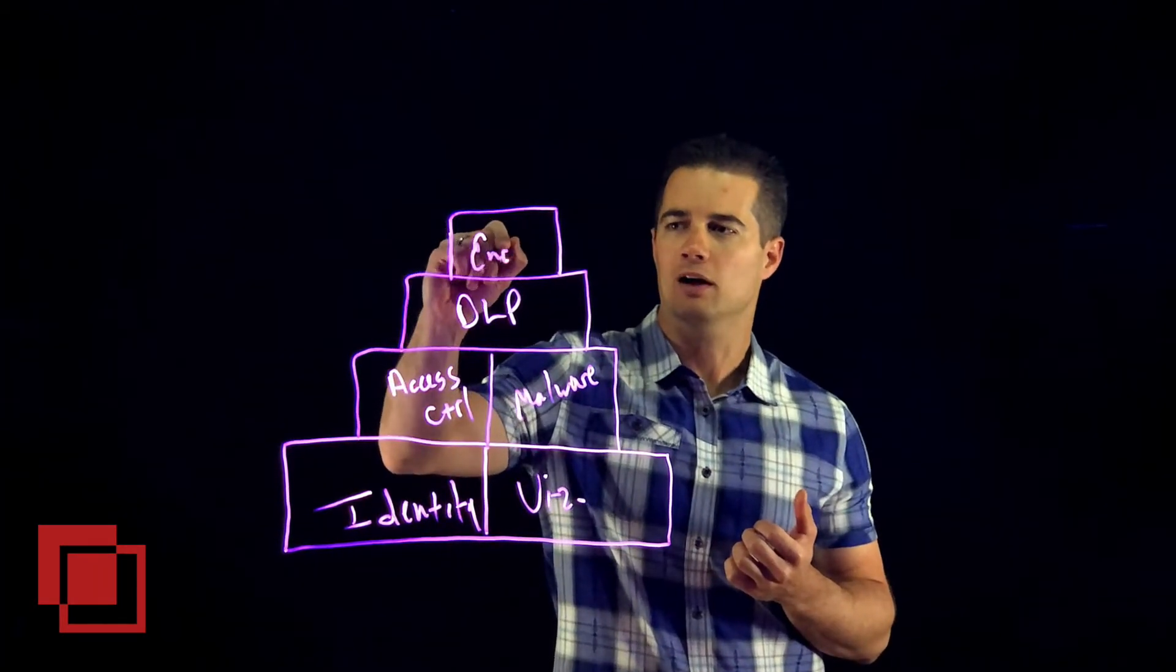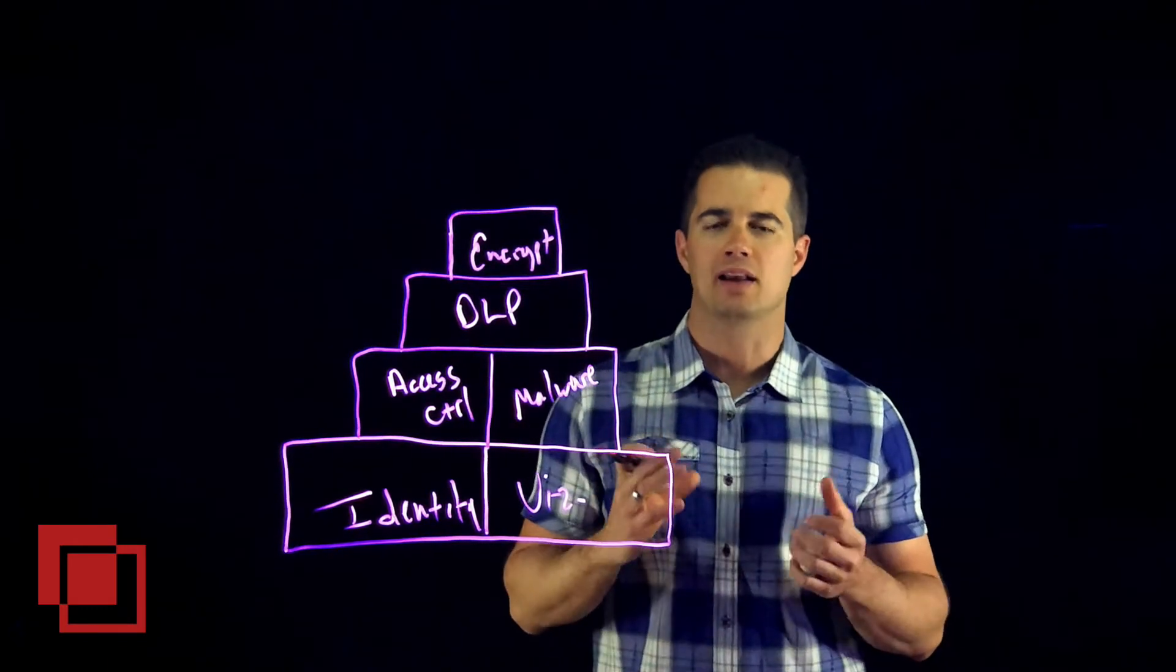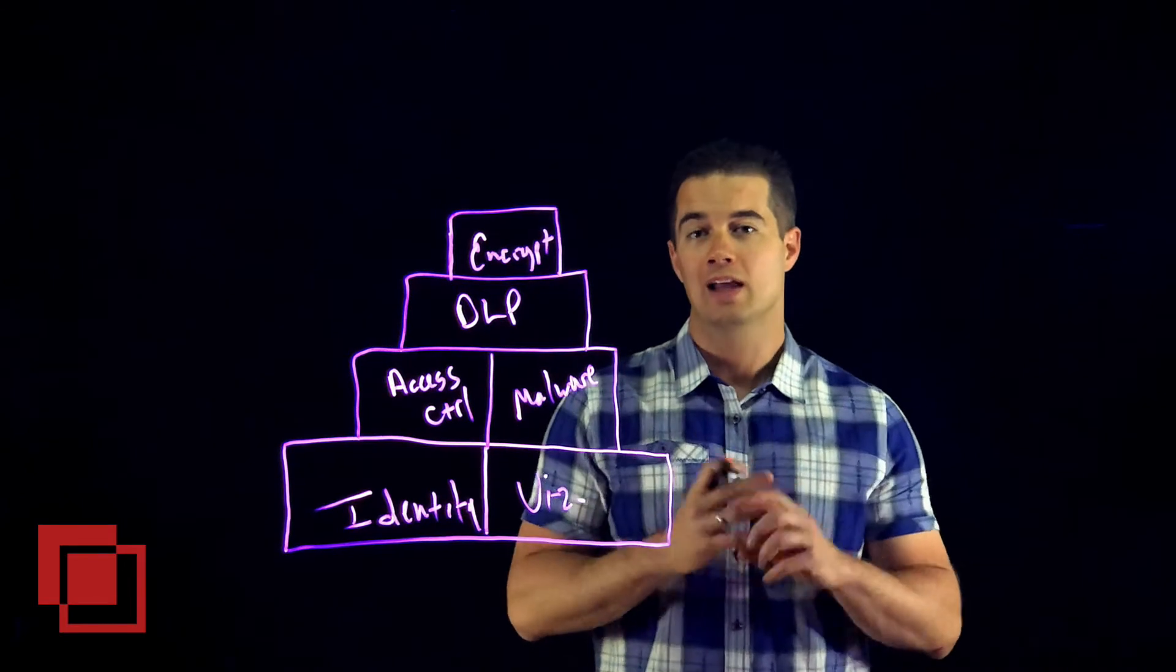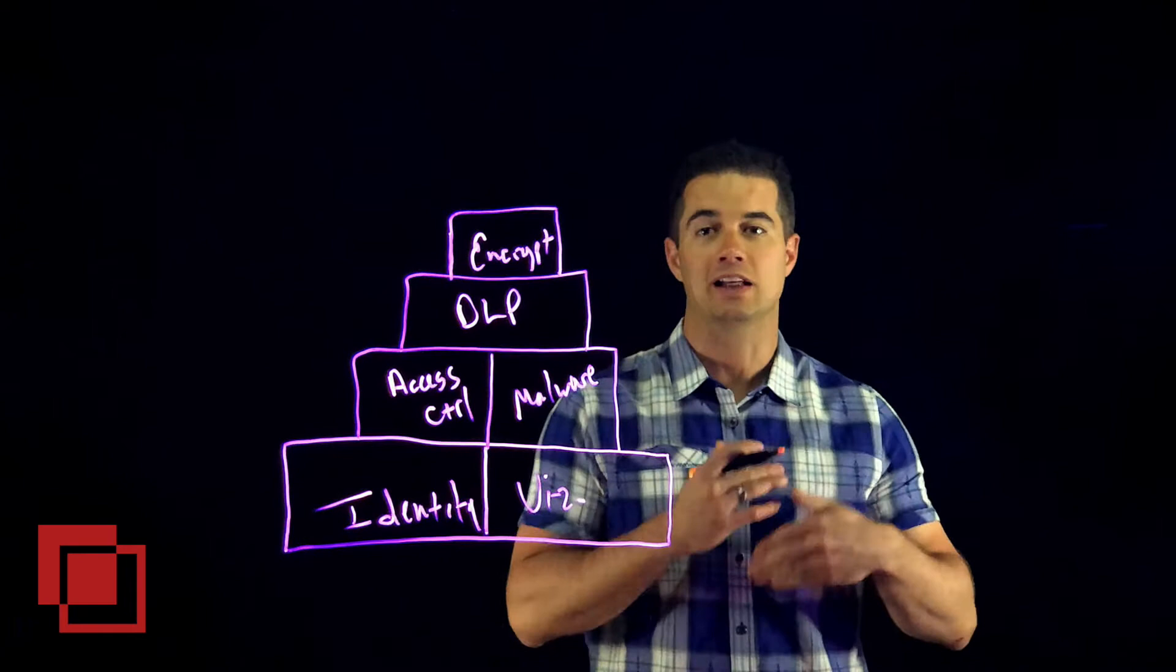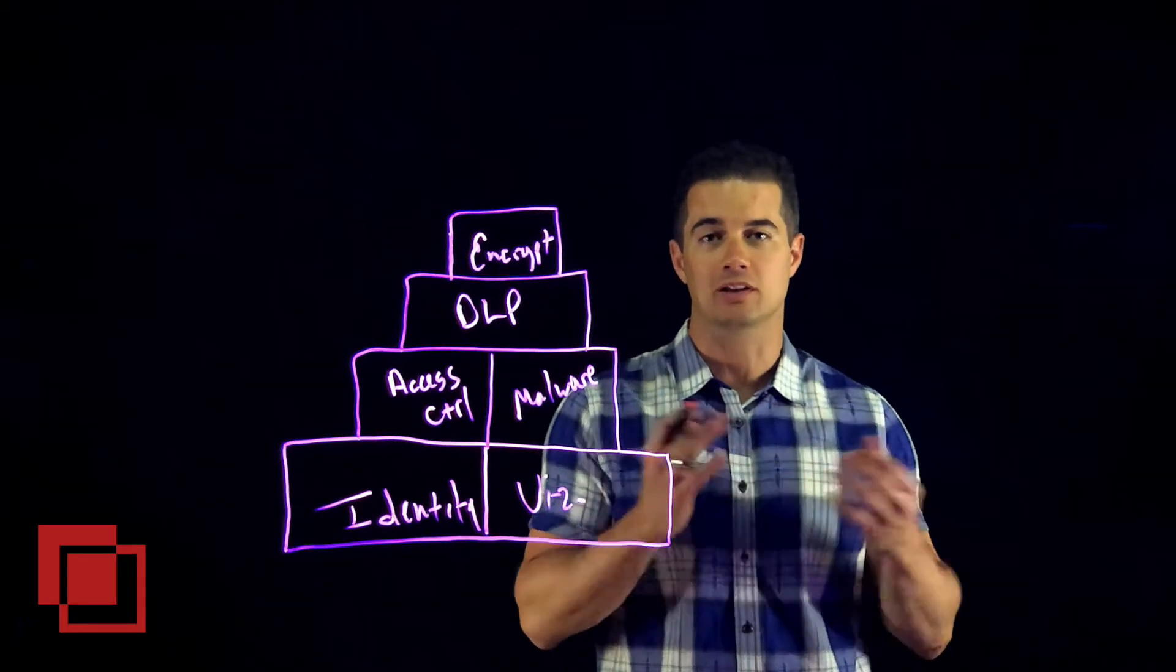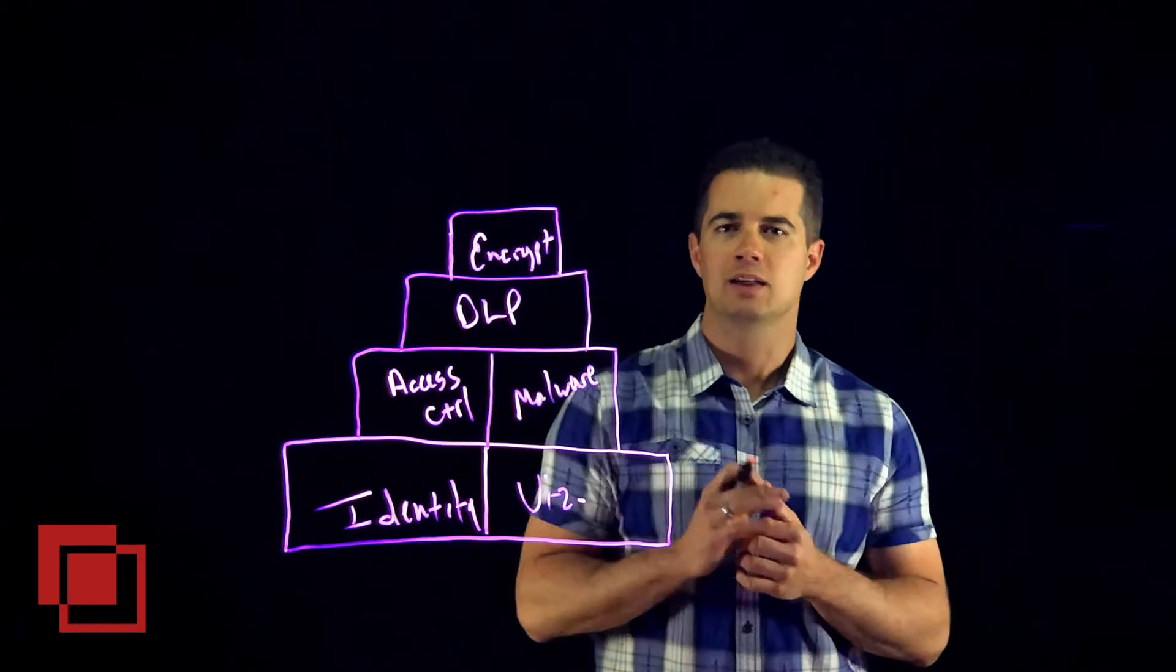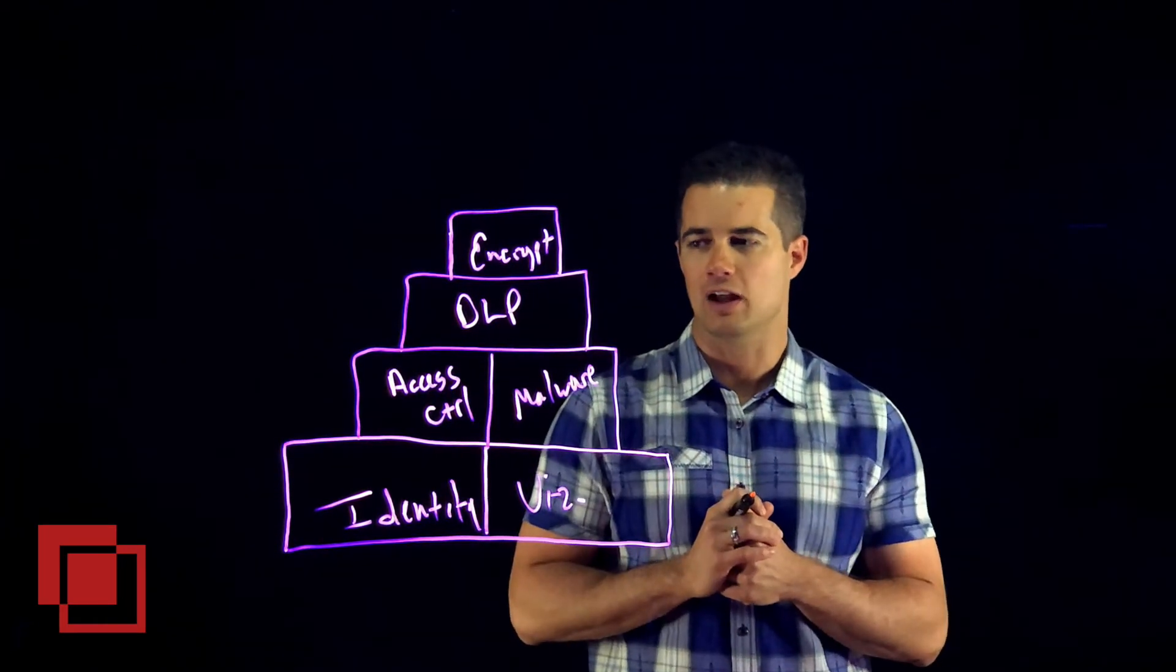At the top of the pyramid is encryption. This is where you'll see broad adoption in industries like financial services and government, where they encrypt data on their premises before it gets to the cloud so they can use the cloud without exposing sensitive data to the cloud application vendor. This is typically used by the most security-conscious and heavily regulated industries.